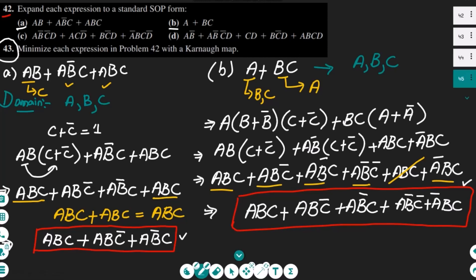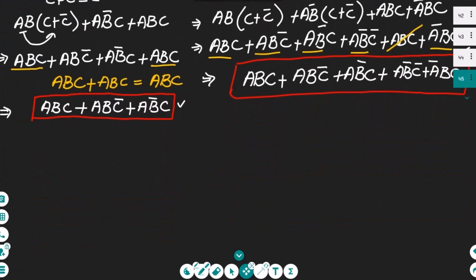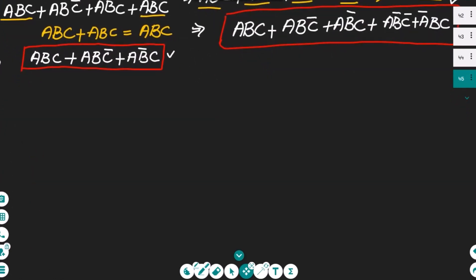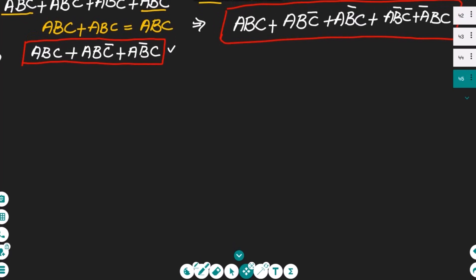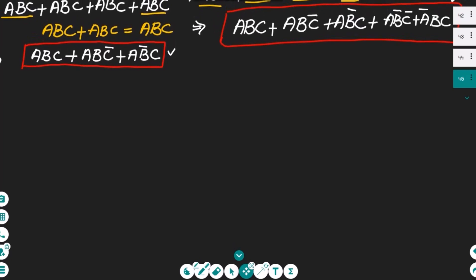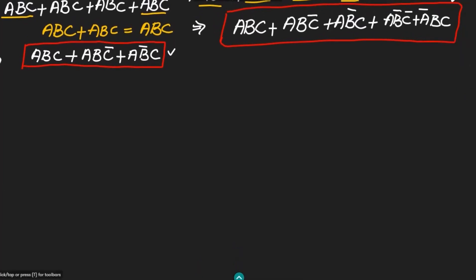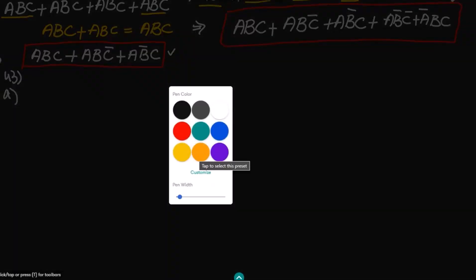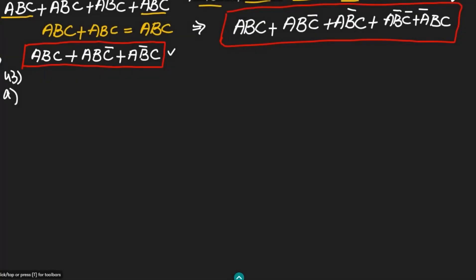Let me move down. This is question 43, and this is part A. The binary values which we can have here are basically 111 for this term, 110 for this term, and for this term I have 101.